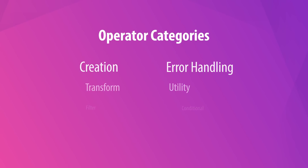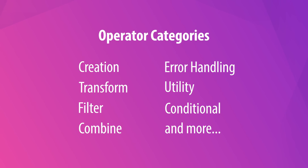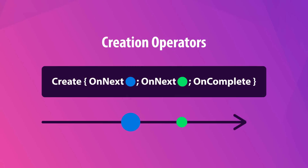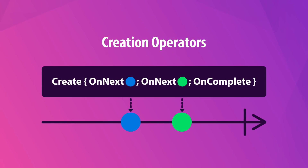There are many operators available in UniRx, so it helps to break them down into categories based on the operations that they perform. The most basic example of this is the create operator, which you might recognize from part 2 of this series.